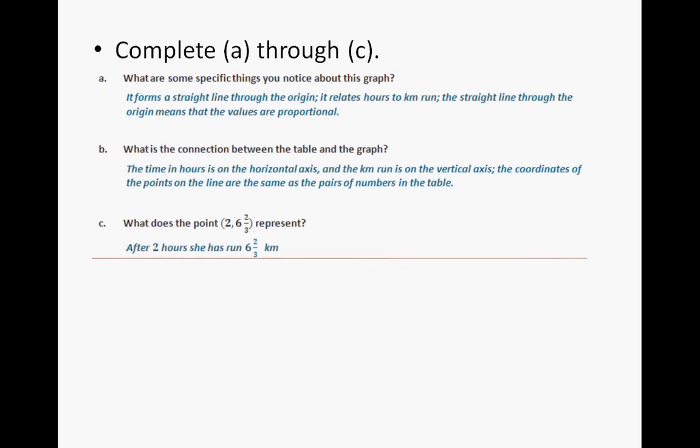Now go ahead and complete parts A through C. When you're done answering those questions, continue the video to check your answers. So for parts A through C, what are some specific things you notice about the graph? Well, it forms a straight line. And it relates the hours to the kilometers run. And it goes through the origin.